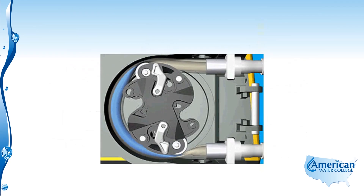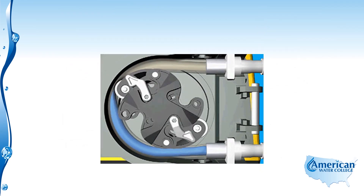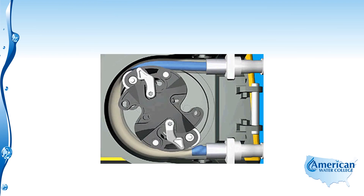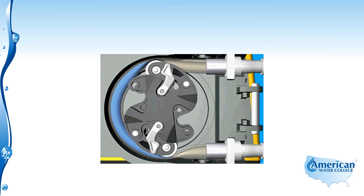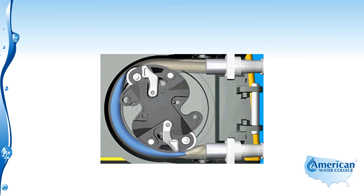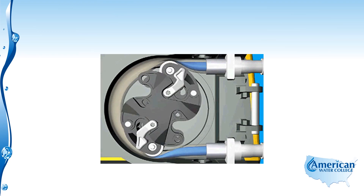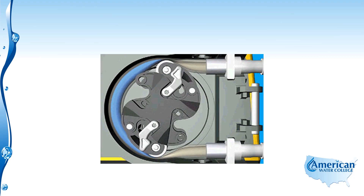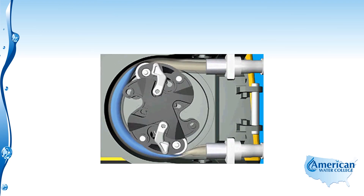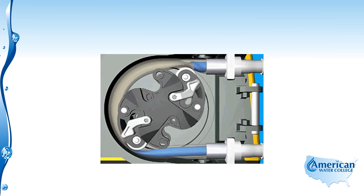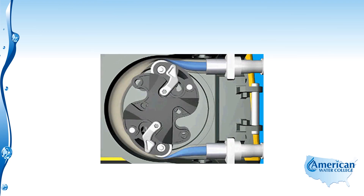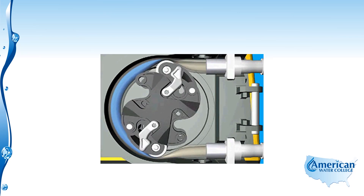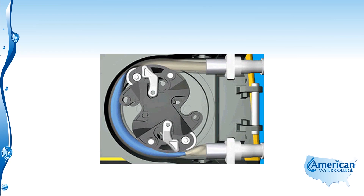Another type is the peristaltic pump, which uses rollers moving on plastic tubing. The blue in the diagram represents the chemical that is drawn in and then forced out by the rollers rolling on the plastic tubing. This is a very inexpensive, effective, and accurate pump. However, the downside is that the flexible tubes must be regularly replaced, so there is higher maintenance on a peristaltic pump compared to a diaphragm pump.